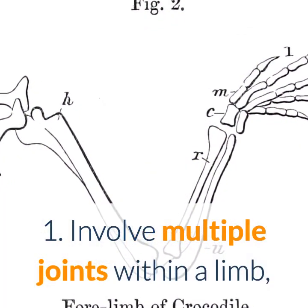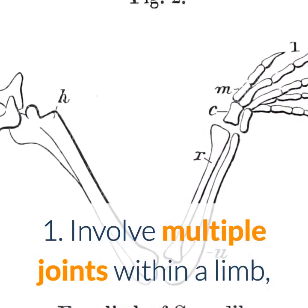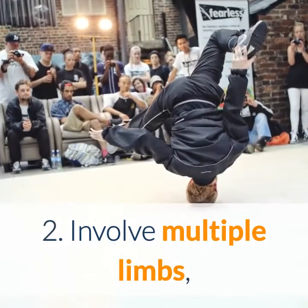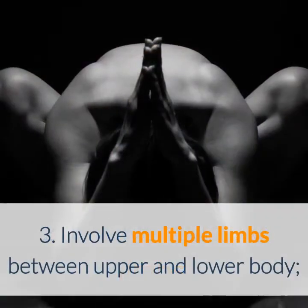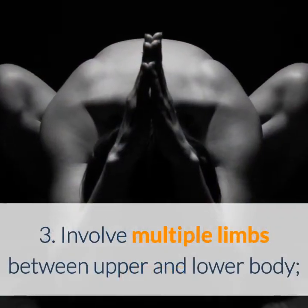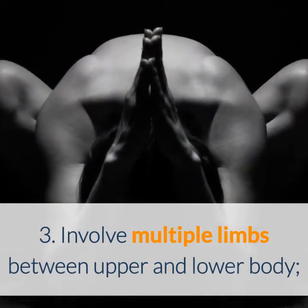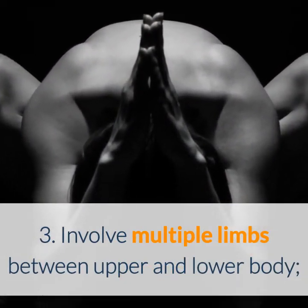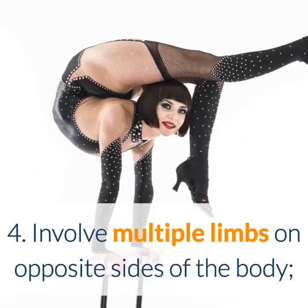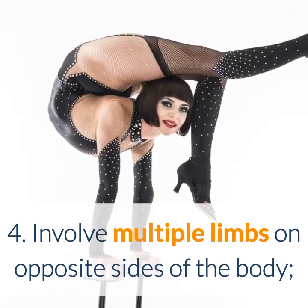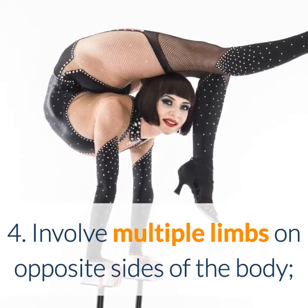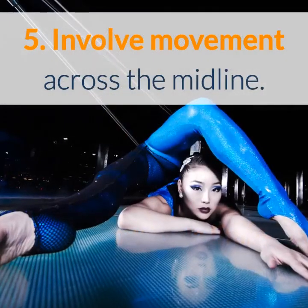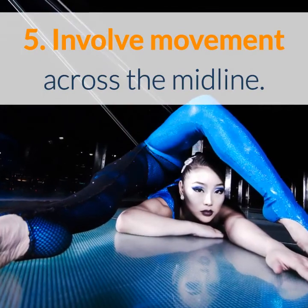First, involve multiple joints within the same limb. Then involve multiple limbs. Follow that by involving multiple limbs between the upper and lower body. Then involve multiple limbs on opposite sides of the body. And finally, involve movement across the midline.